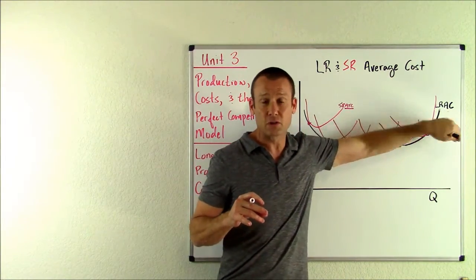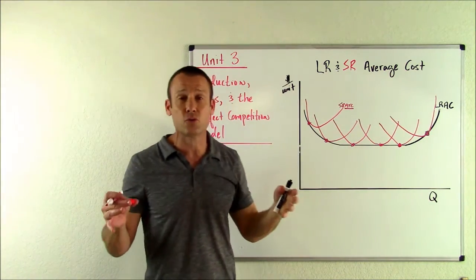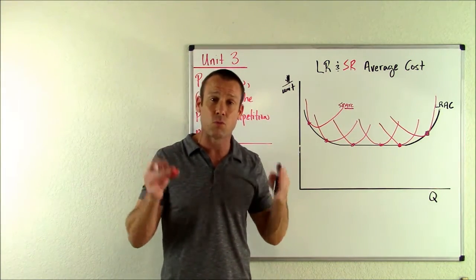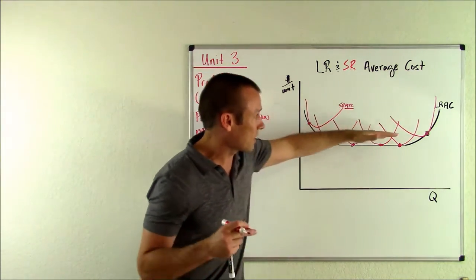But again, there's no fixed cost. There's only one type of cost. It's all variable. So you don't need the T because you don't have two different types of cost. Again, you only have one variable cost. So here's the thing, you see all those SRATCs?